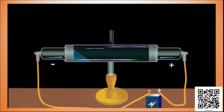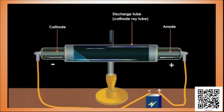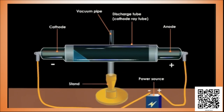Cathode rays are produced in a discharge tube, hence the discharge tube is generally referred to as the cathode ray tube. The cathode ray tube is a partially evacuated glass tube with a cathode and anode placed at the ends. A vacuum pump is used to partially evacuate the tube. The cathode is connected to the power source with a clip, and the tube is supported on a stand. It was found that electric discharge through gases took place only when the pressure inside the tube was lowered and the potential difference between the electrodes was high.